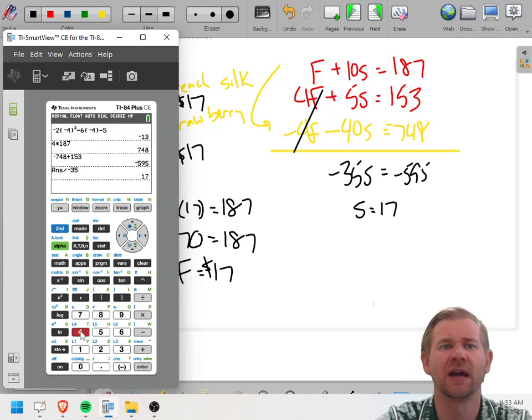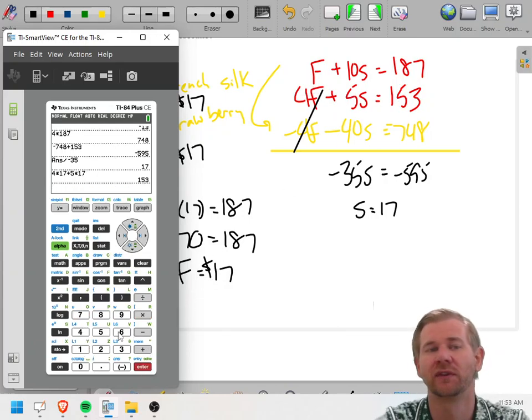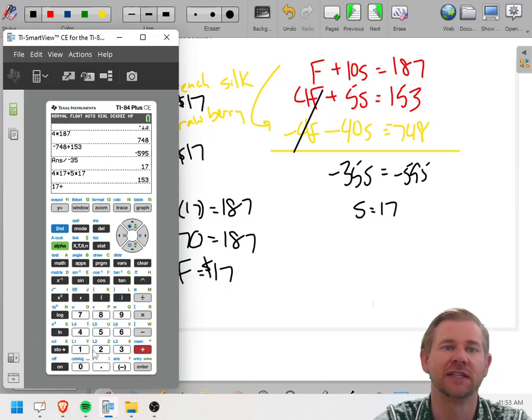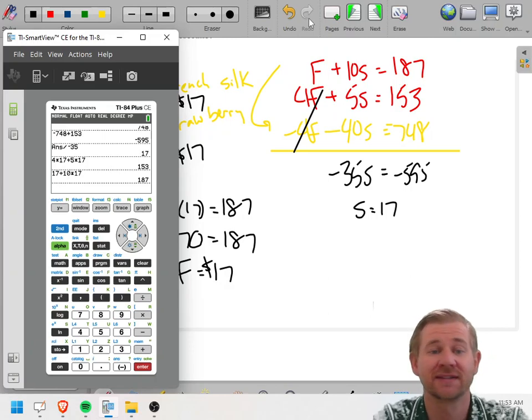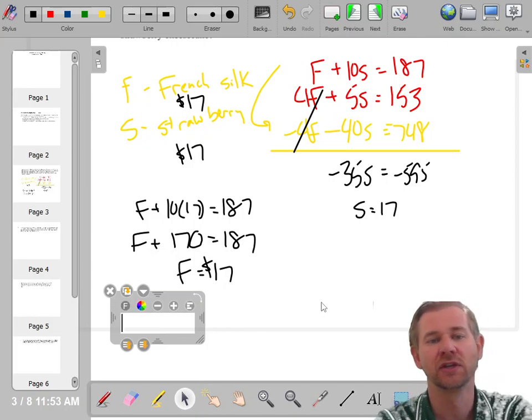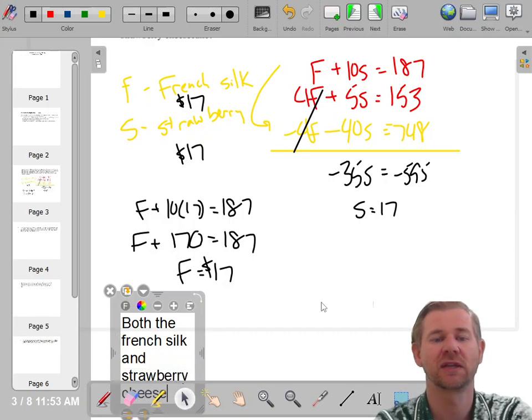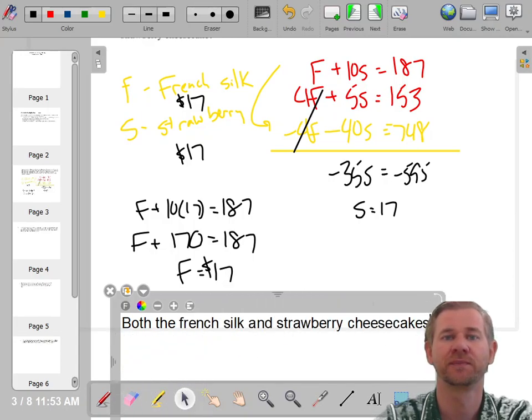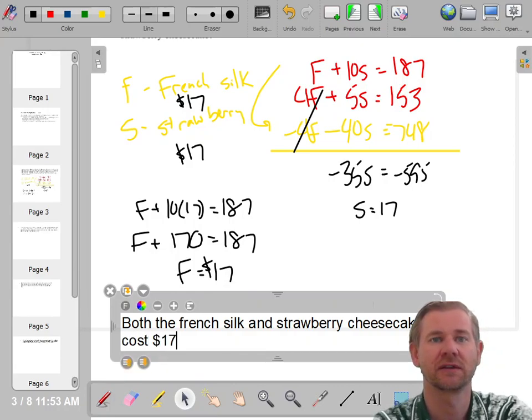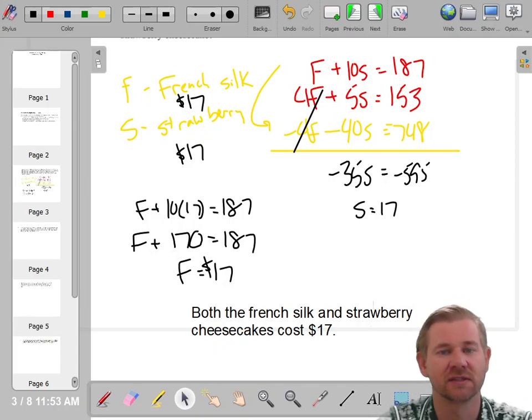So if I do 4 times 17 plus 5 times 17, I'm plugging into this one, I should get 153. And just to make sure 17 plus 10 times 17 is 187. So it works in both equations. I know I did it right. They both cost $17. And I want you to always write a sentence. It's a word problem. So both the French silk and strawberry cheesecakes cost $17. A word problem should have a word answer. So I'm going to write a sentence.